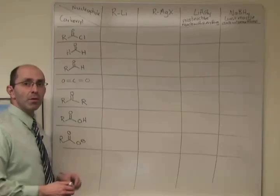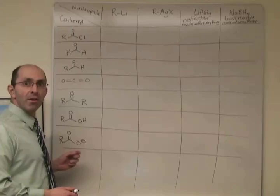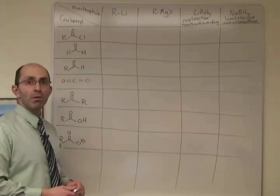The acidic proton is going to react faster. So when we react any of these reagents with a carboxylic acid, we generate a carboxylate anion. Then the question is, is that carboxylate anion reactive with any of these nucleophiles?